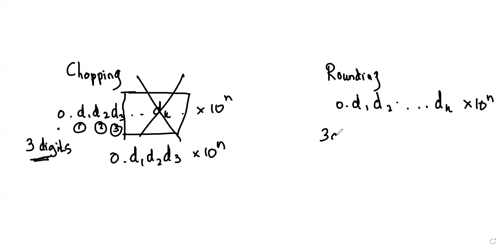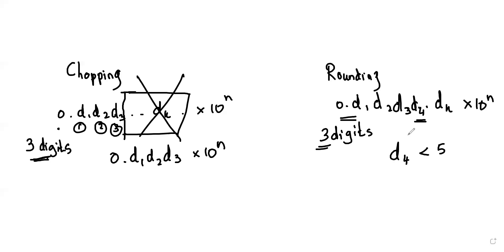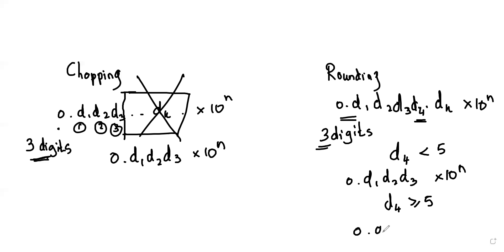For rounding to three digits, first convert to normalized form, then check the fourth digit. If the fourth digit d4 is less than five, we keep the first three digits as-is: 0.d1 d2 d3 × 10^n. If d4 is greater than or equal to five, we round up by adding one to d3, giving 0.d1 d2 (d3+1) × 10^n. So we check the fourth digit and round accordingly.